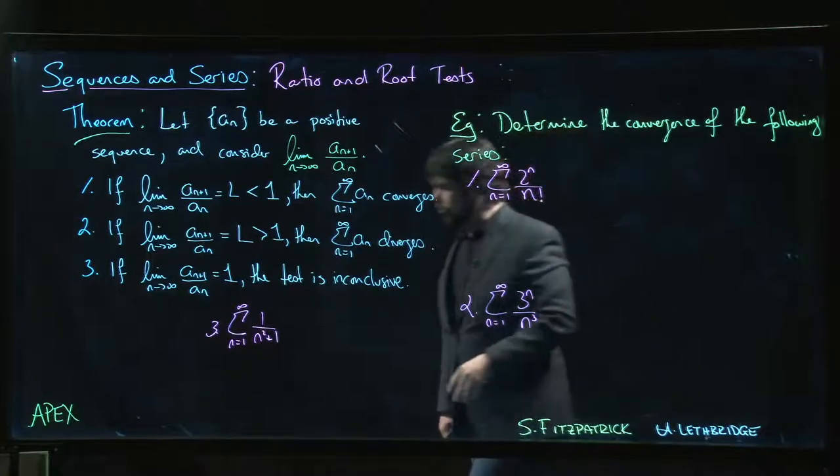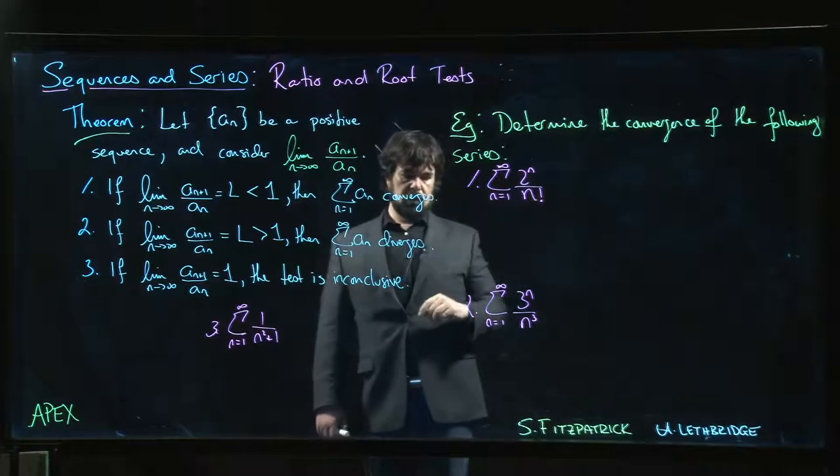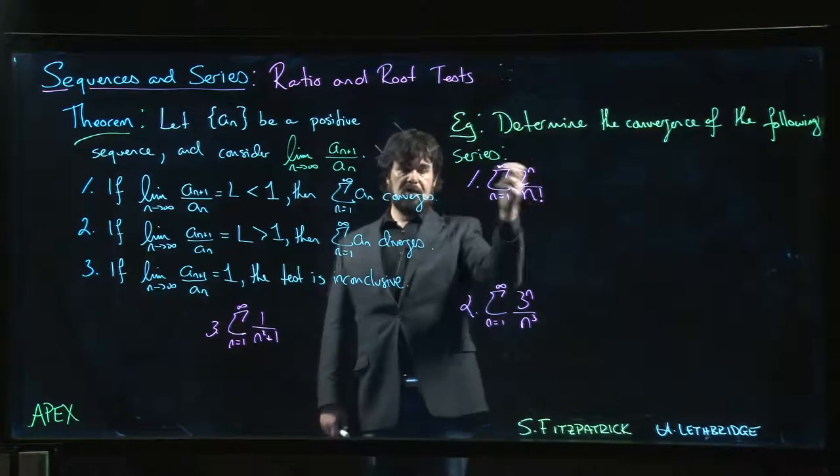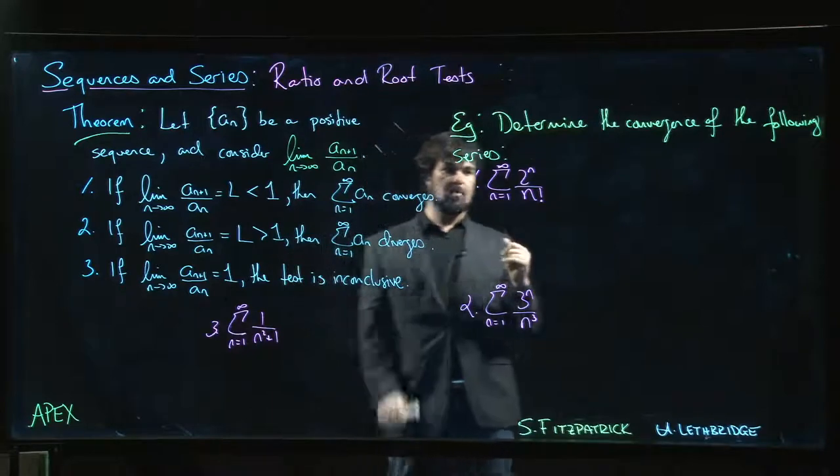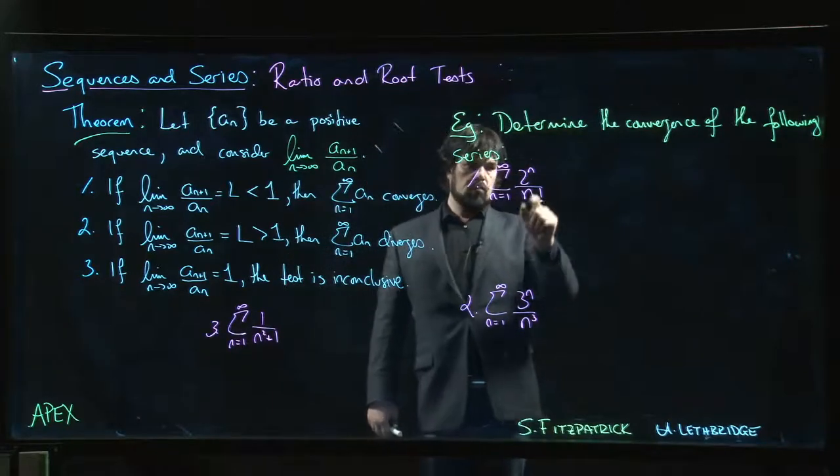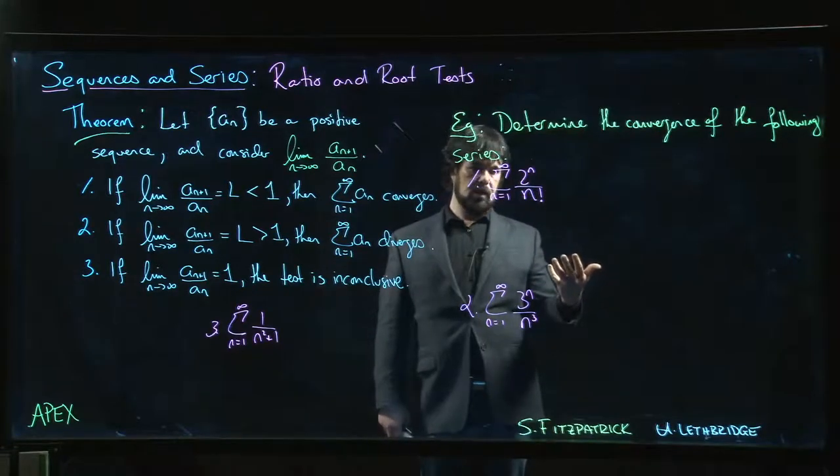We want to see if we can use the ratio test to determine convergence of these series. Now the ratio test tends to work really well for things like powers and factorials. You know, exponentials. We mentioned that the ratio test is sort of closely related to geometric series. So when you see exponential functions, you expect that the ratio test is probably going to be good.